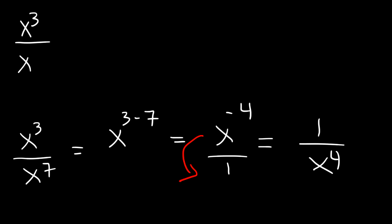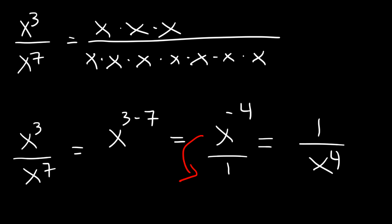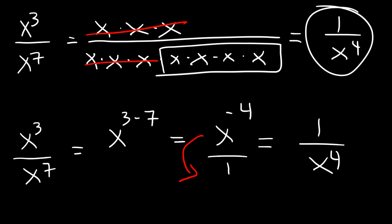To confirm it, you can do it this way. x cubed is simply 3 x variables multiplied to each other, whereas x to the 7 represents 7 x variables multiplied with each other. We can cancel 3 on top and 3 on the bottom, leaving 4 left over on the bottom. So that's why it's 1 over x to the 4th.